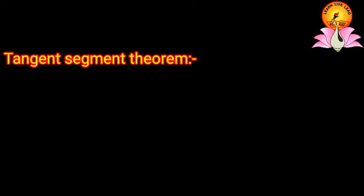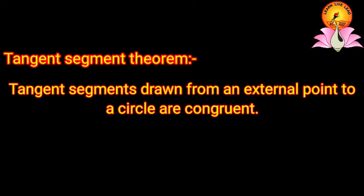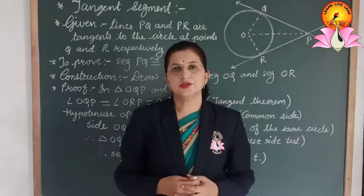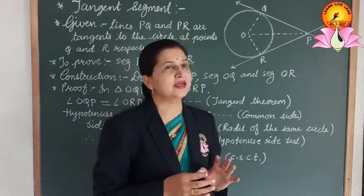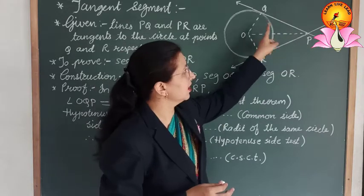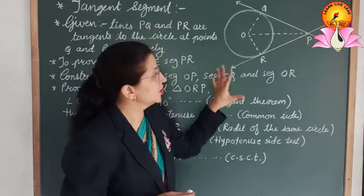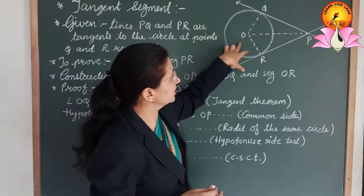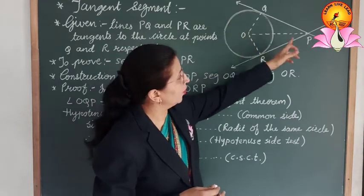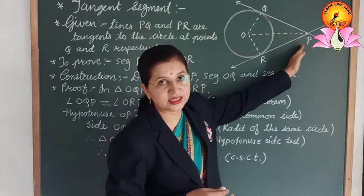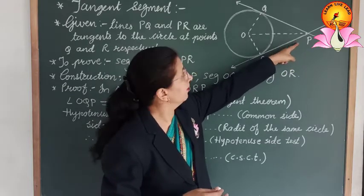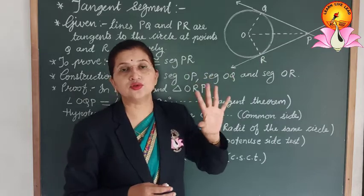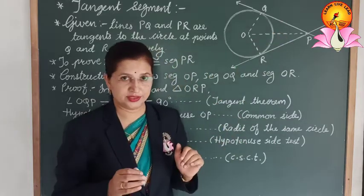Tangent Segment Theorem: Tangent segments drawn from an external point to a circle are congruent. According to this statement, we have a circle with center O and point P external to the circle, with two tangent segments PQ and PR. We have to prove that these tangent segments are congruent, that is, segment PQ is congruent to segment PR.